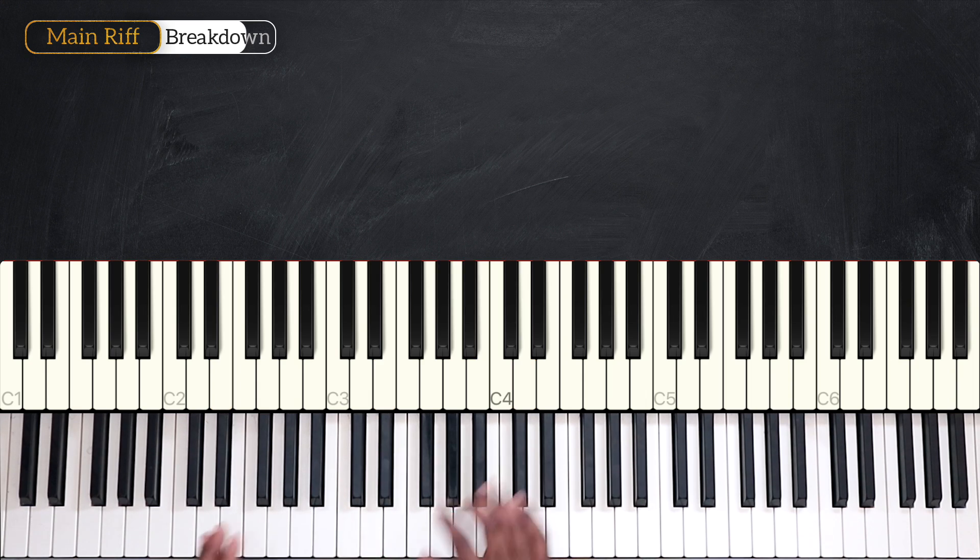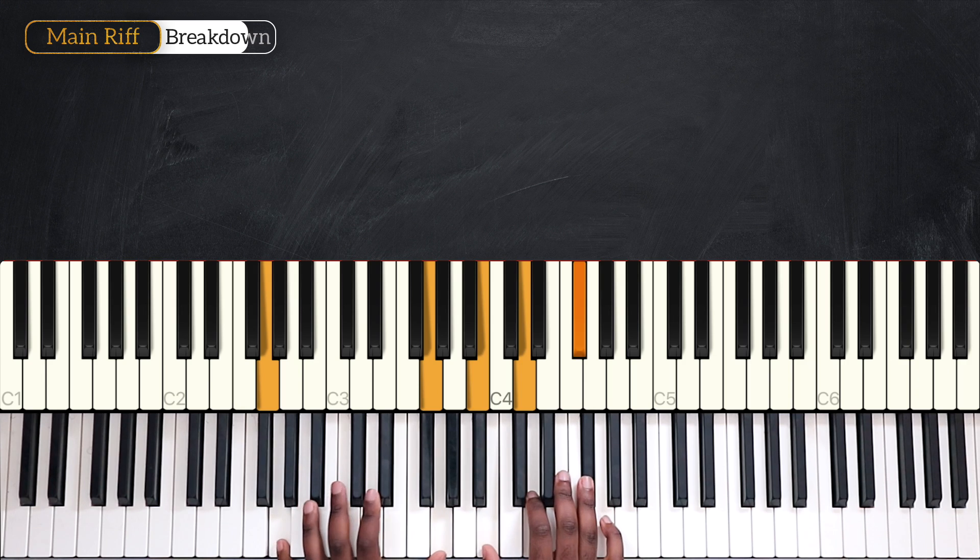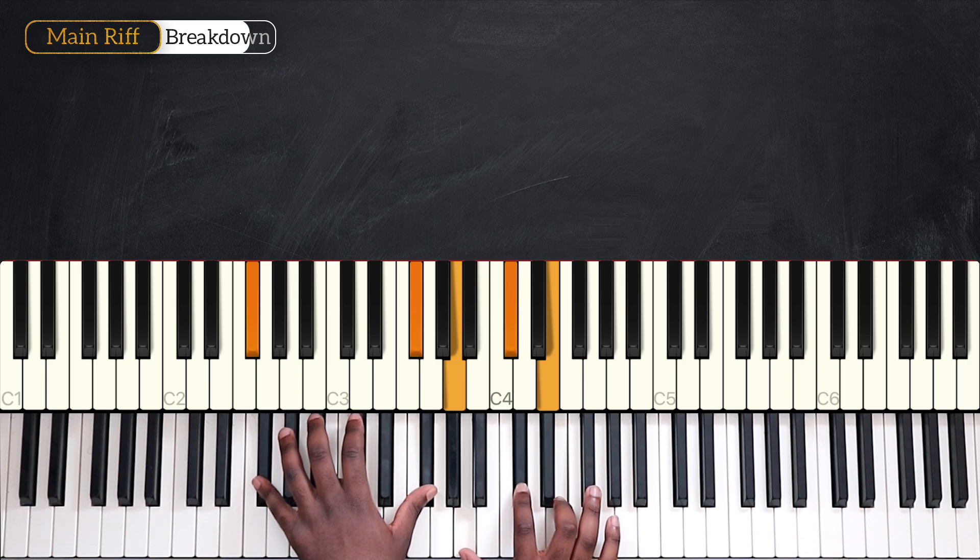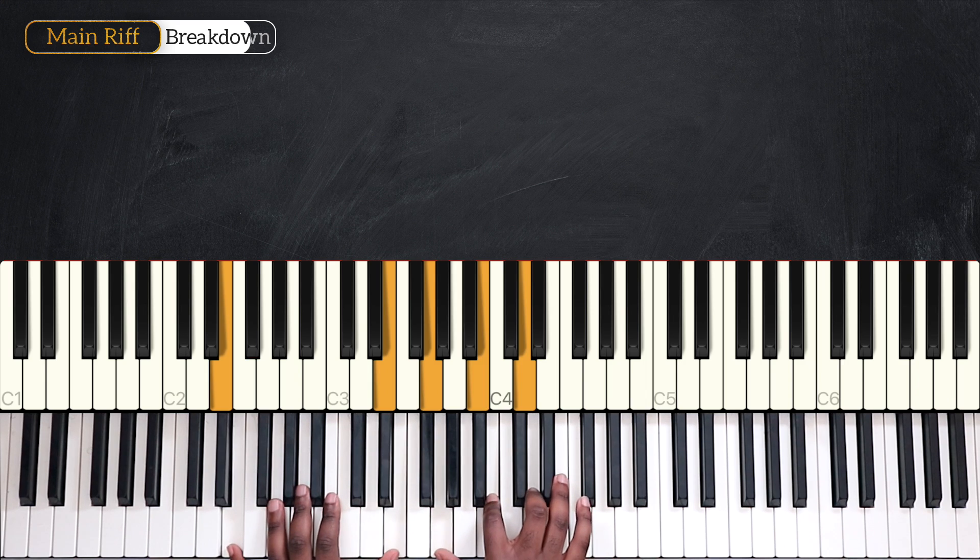And now for the second part, what we're going to do is start on G major 7 and go down from here on F sharp minor 7, followed by E minor 7. And now we're going to use the new chords.